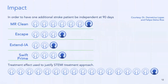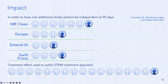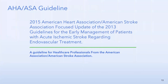The impact: to have one additional stroke patient independent at 90 days, the number needed to treat is between three and seven patients depending on the study — amazing compared to the STEMI treatment approach where you need to treat about 17 patients for one good outcome. So in 2015, because of these positive studies, the American Stroke Association updated their guidelines — something they rarely do just two years after the previous update.